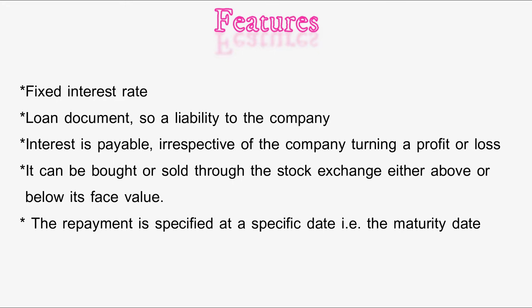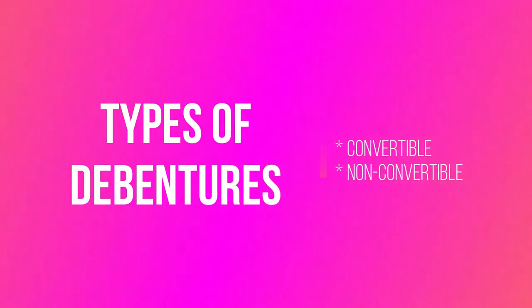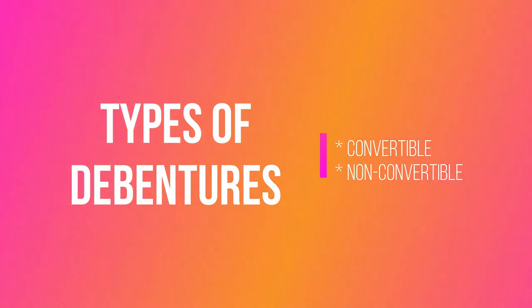Interest is payable irrespective of the company turning a profit or a loss. Debentures can be bought or sold through the stock exchange either above or below their face value. Repayment is specified at a specific date, i.e. the maturity date. The face value or par value of a debenture is the amount paid to the debenture holder at the maturity date, as long as the debenture holder does not default. There are two types of debentures: convertible and non-convertible.